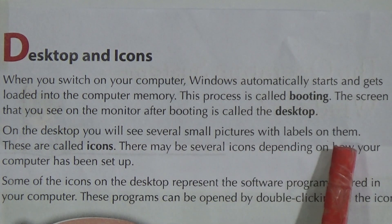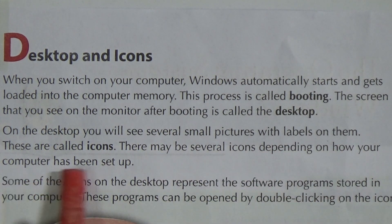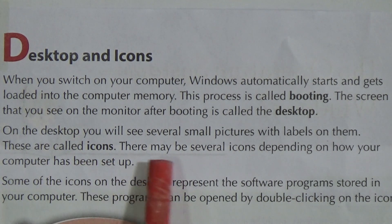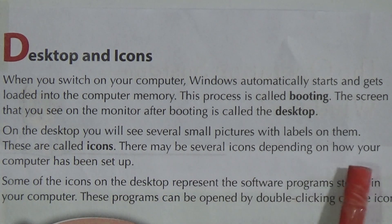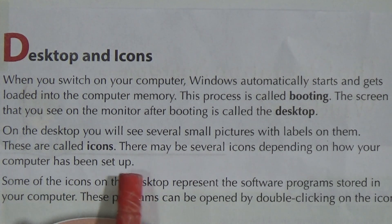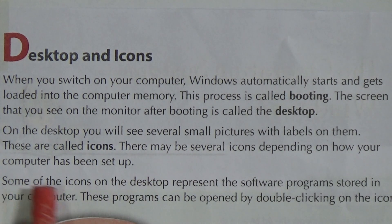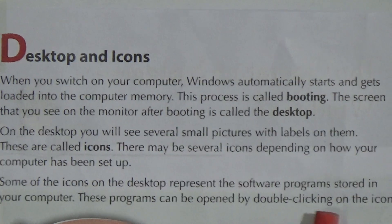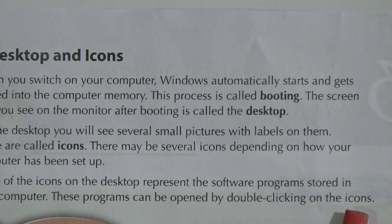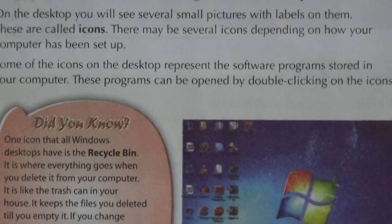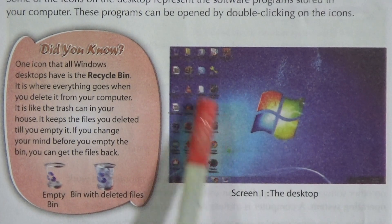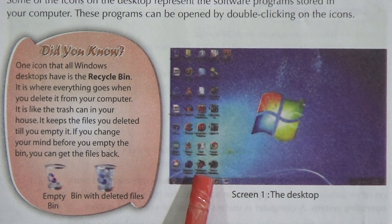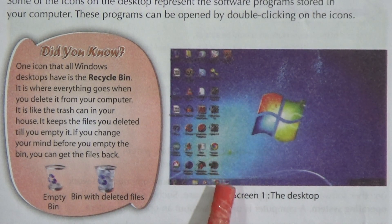On the desktop you will see several small pictures with labels on them. These are called icons. There may be several icons depending on how your computer has been set up. Some icons represent the software programs stored in your computer. These programs can be opened by double clicking on the icons. Look at the picture — you can see the desktop and open different programs by clicking on these icons.